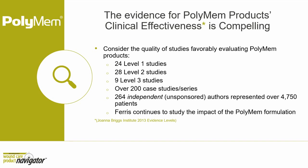The evidence behind PolyMEM is compelling. Based on the Joanna Briggs Institute evidence levels of 2013, there are 24 Level 1 studies, 28 Level 2 studies, 9 Level 3 studies, and over 200 case study series. These have been conducted by 264 independent, unsponsored authors, representing nearly 5,000 patients in total. Ferris continues to study the impact of the PolyMEM formulation, and the evidence continues to mount on its effectiveness.